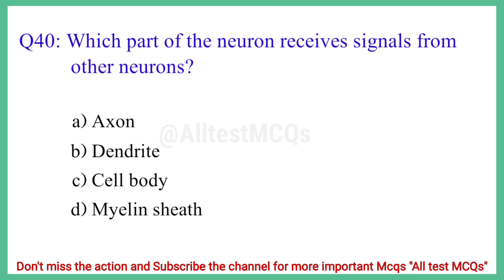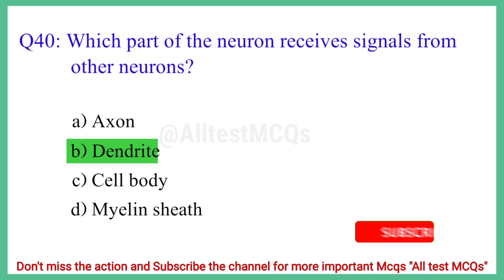Question No. 40: Which part of the neuron receives signals from other neurons? The correct answer is option B: Dendrite.